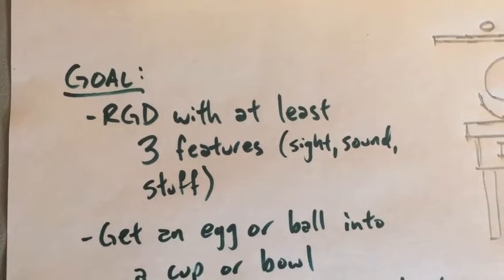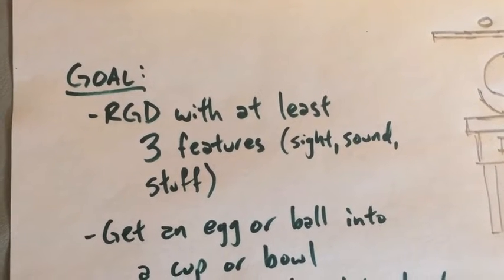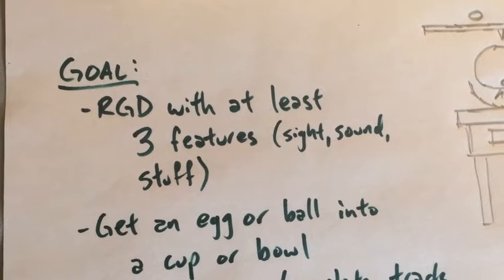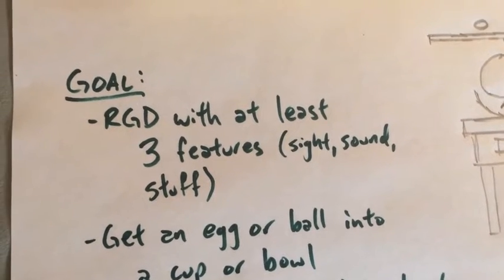So a ramp, makes a bell, makes a light turn on, makes something pop, makes a ball or a cargo moving somewhere. So three things.